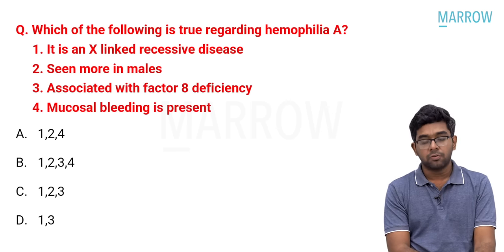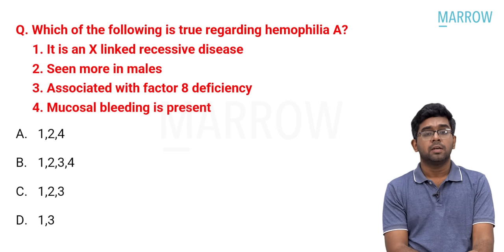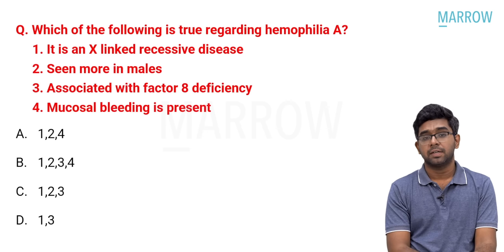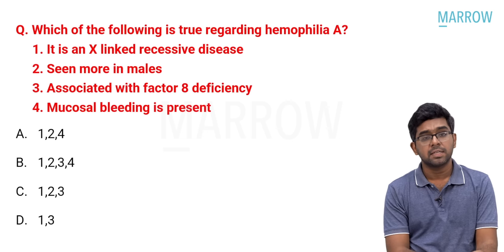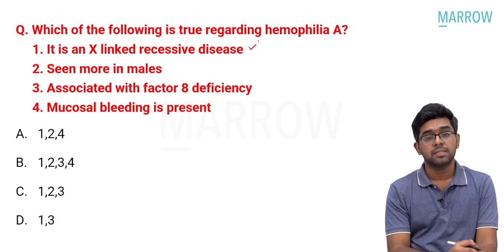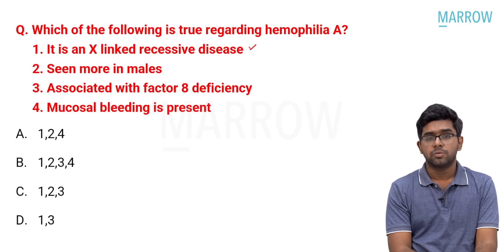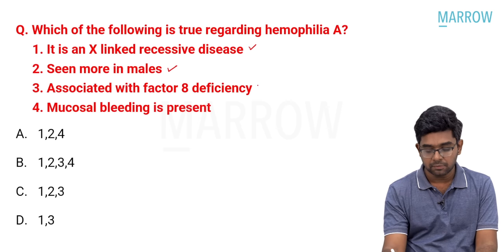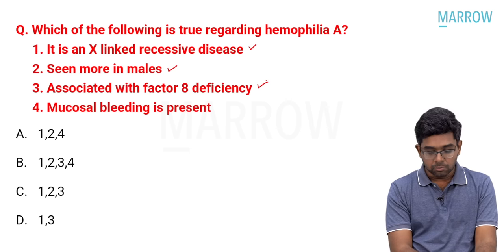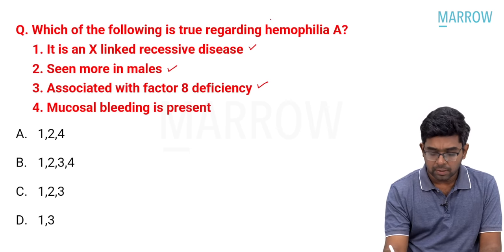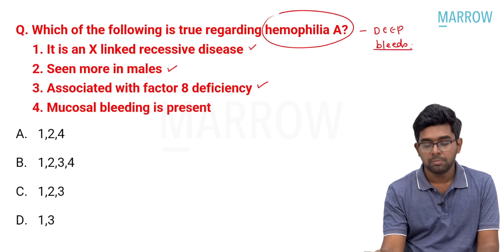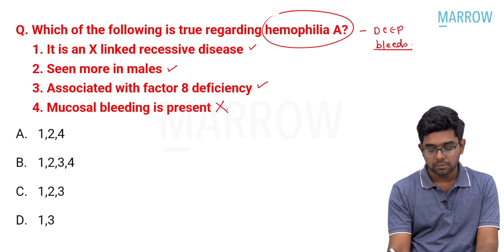A multiple option question: which of the following is a true statement regarding Haemophilia A? Haemophilia A is an important coagulation disorder involving factor 8. 'It is an X-linked recessive disease' — absolutely true, seen more in males. 'Associated with factor 8 deficiency' — also a true statement. 'Mucosal bleeding is present' — this is wrong. Haemophilia is a clotting factor defect characterized by deep bleeds, not superficial mucosal bleeds.